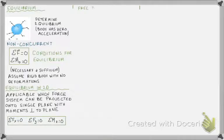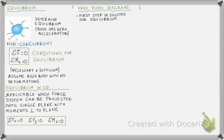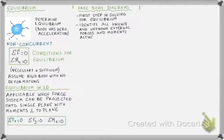That's just a little reminder about equilibrium. Now let's talk again about free body diagrams. Free body diagrams we've practiced quite a bit in this class. We draw them in every problem, and they are in fact the first step in solving for equilibrium. We want to be able to look and see all the forces that are acting on a given body. Their purpose is to identify all known and unknown external forces and moments acting on a rigid body.